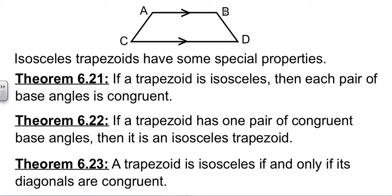AC and BD are not parallel. Well, those are the legs. Angle A and angle B would be one pair of base angles. C and D would be another pair.